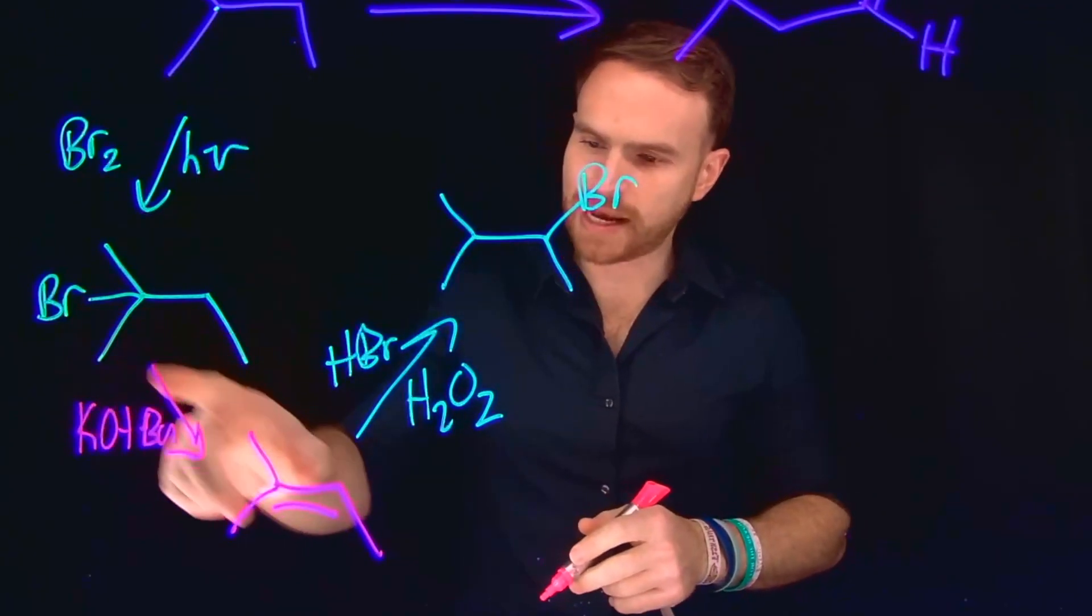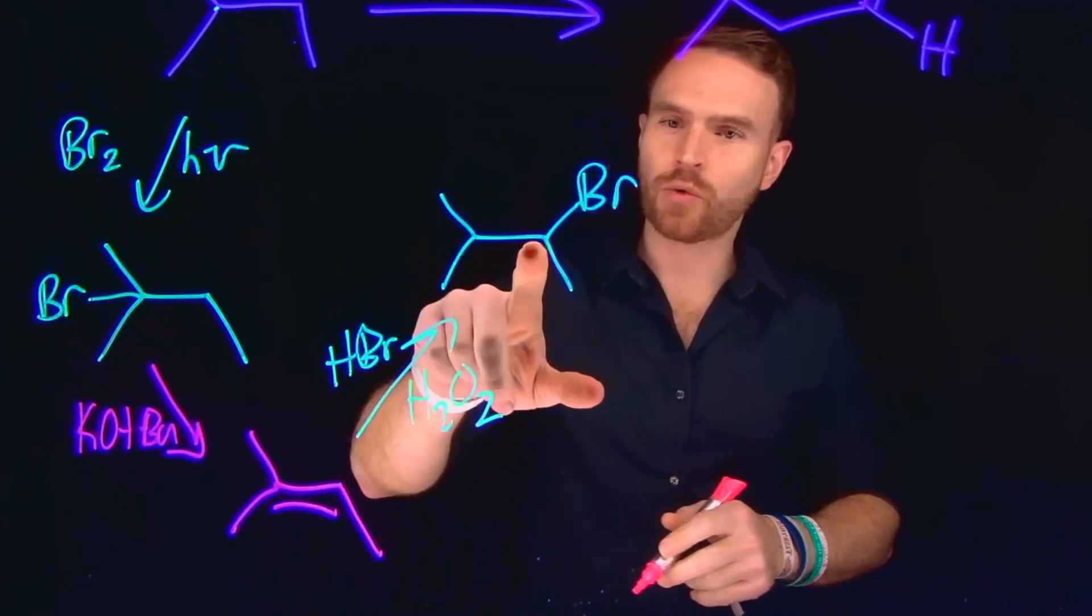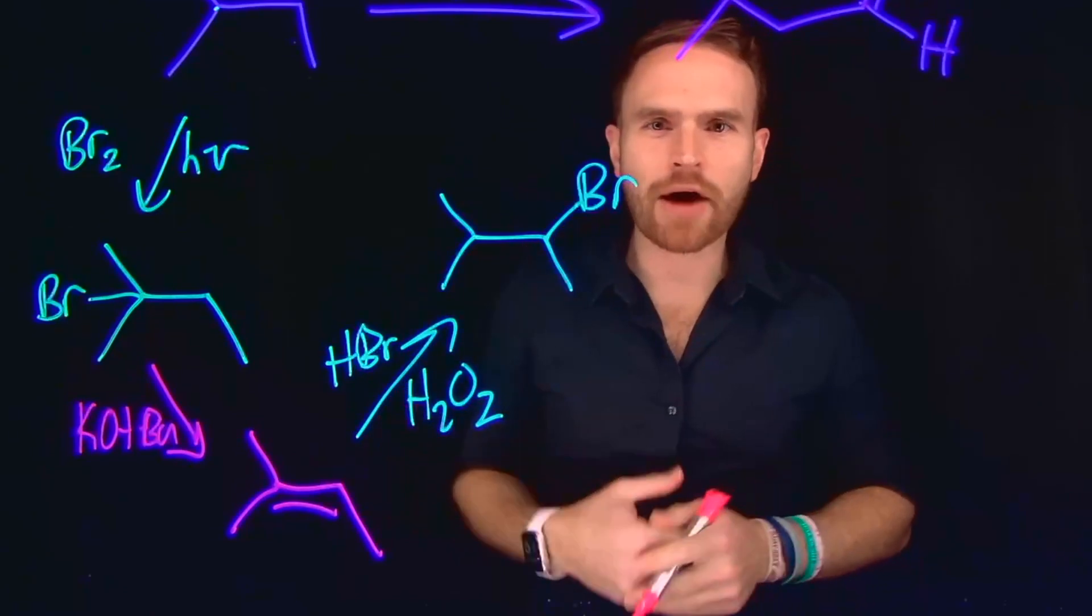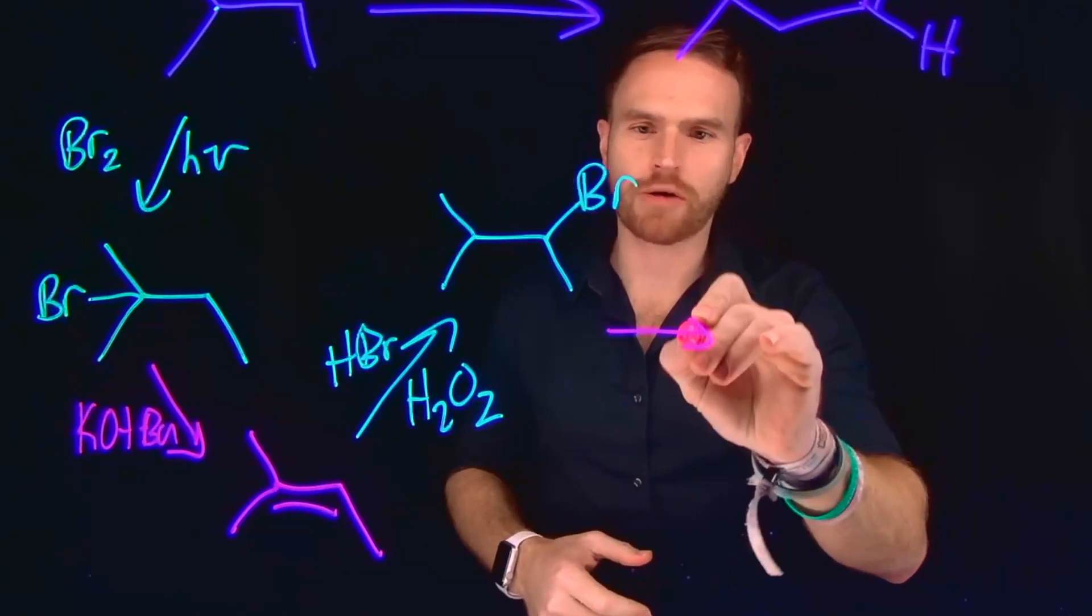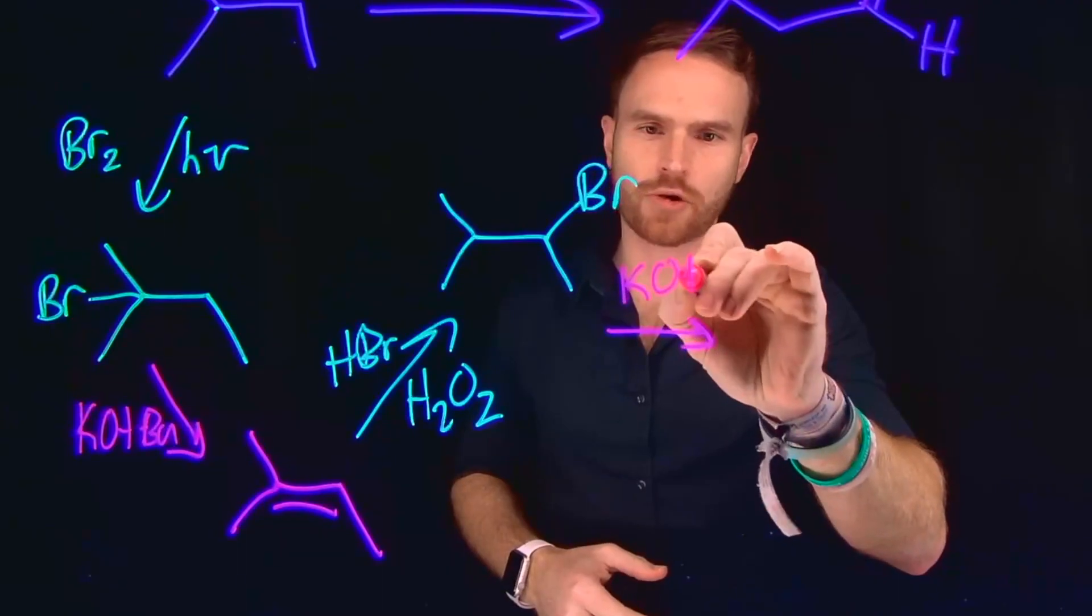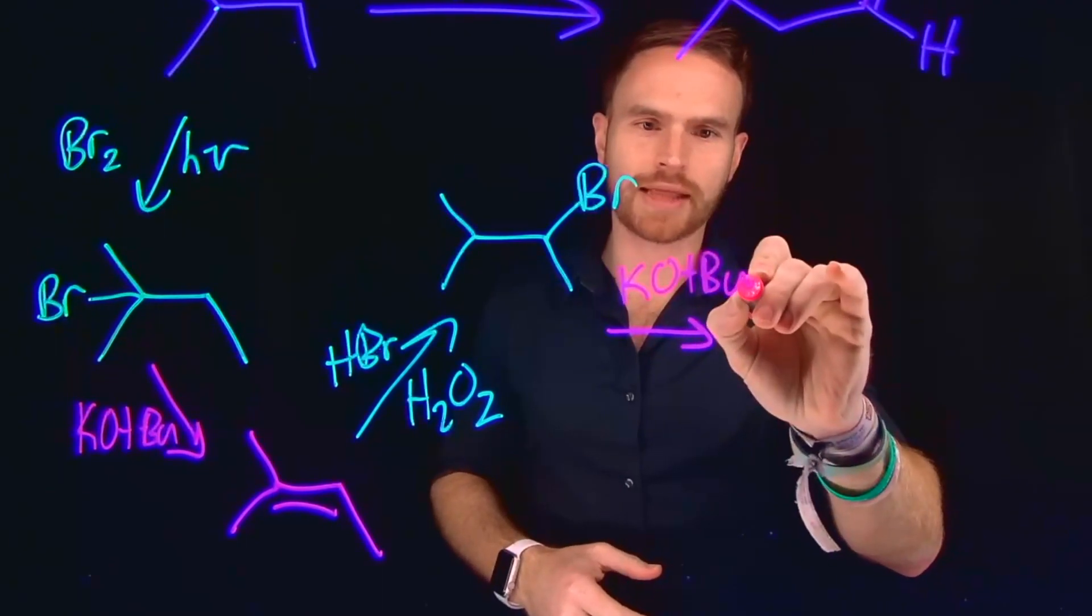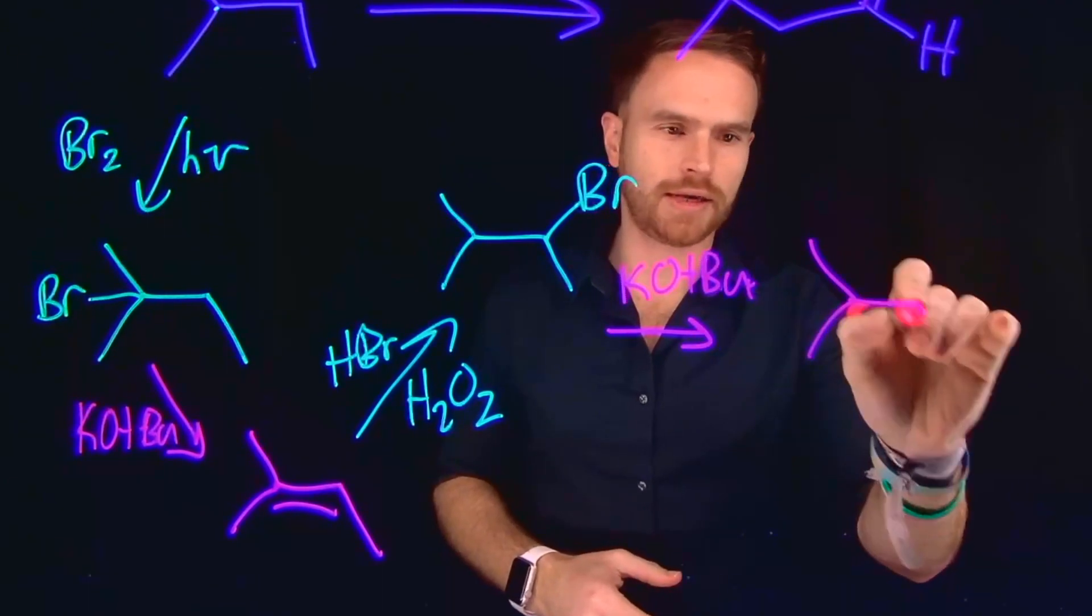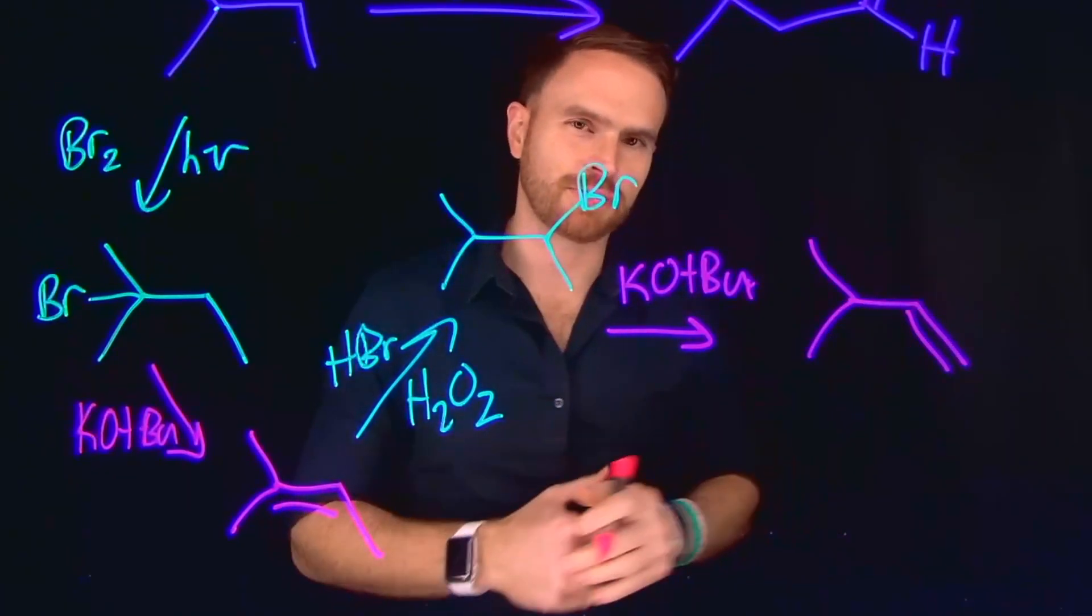And this is going to allow me a pathway to move over the location of that alkene. So I had to first brominate, eliminate to make the alkene, re-brominate at a different position, and now I can make an alkene at this position, again by adding a strong base, like again potassium terbutoxide. And that is going to allow me to generate that terminal alkene, where now the alkene is placed at this position.